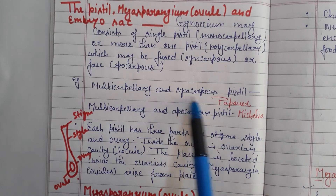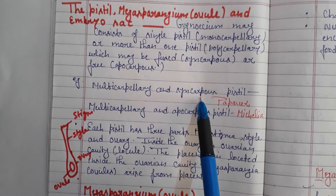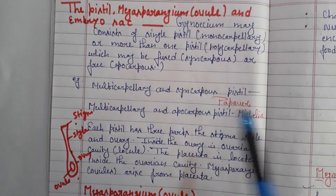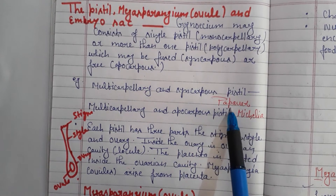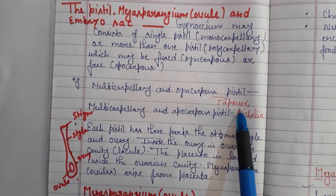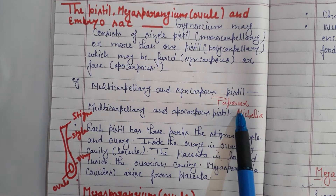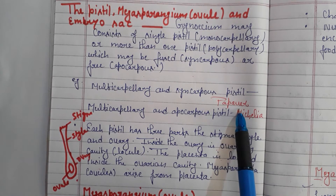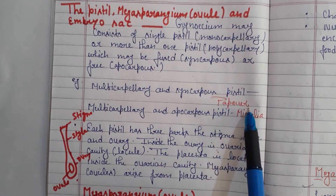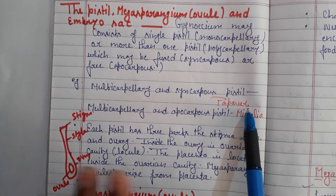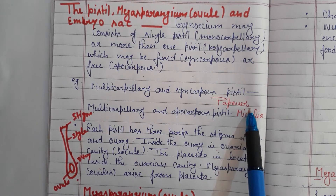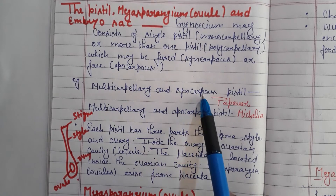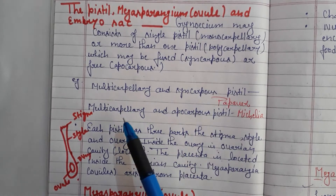For example, multi-carpillary and syncarpous — where the ovary carpels are fused. The flower example here is Papaver somniferum. There is one chapter related to drugs in the 12th class curriculum where you will read about papaver and opium. So this flower is multi-carpillary and syncarpous.